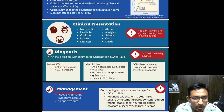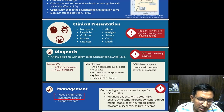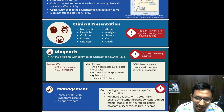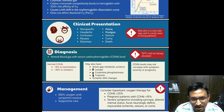The mainstay of treatment for carbon monoxide poisoning is the administration of 100% oxygen, which helps to displace carbon monoxide from hemoglobin, allowing the hemoglobin to carry oxygen effectively again. When you give 100% oxygen, you can displace the carbon monoxide bound to hemoglobin so that oxygen can bind and reverse the condition. This treatment is continued until symptoms resolve.